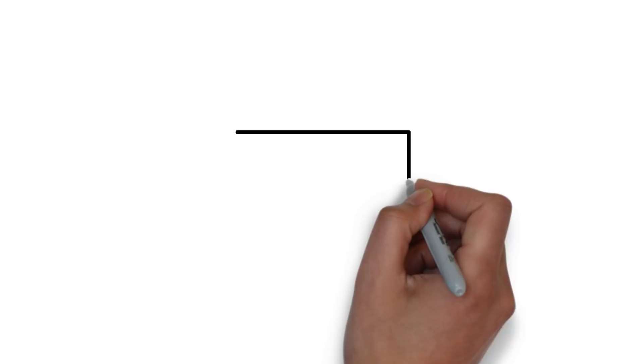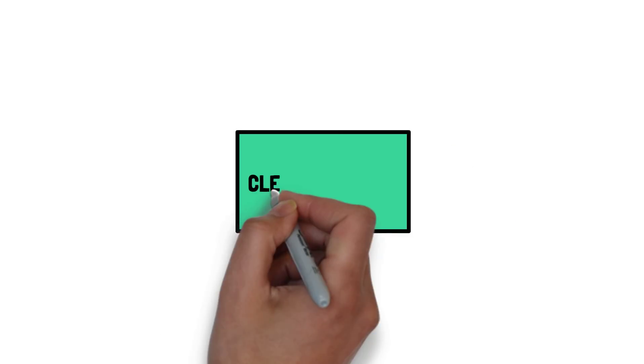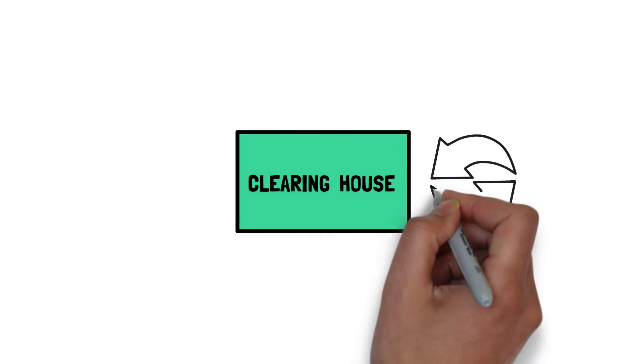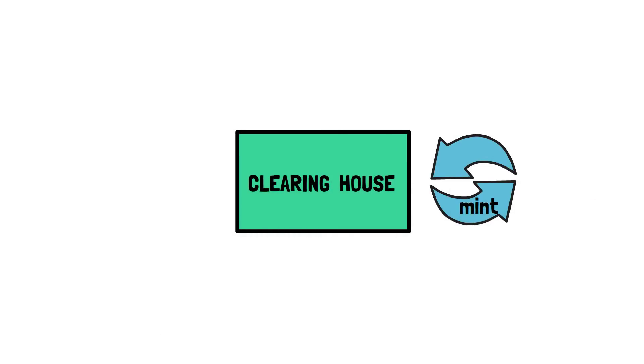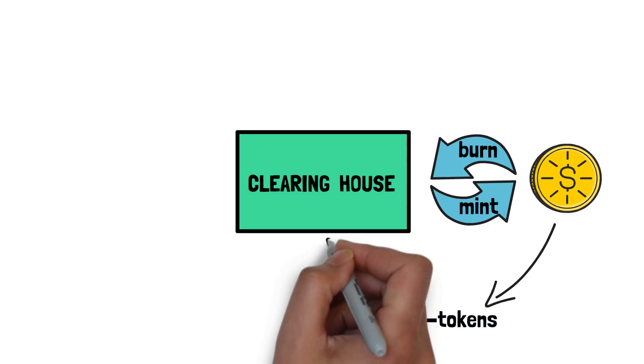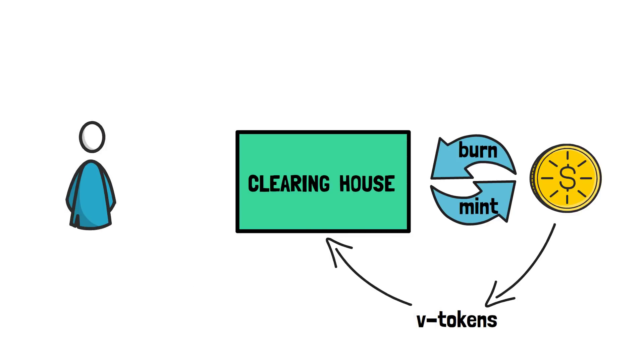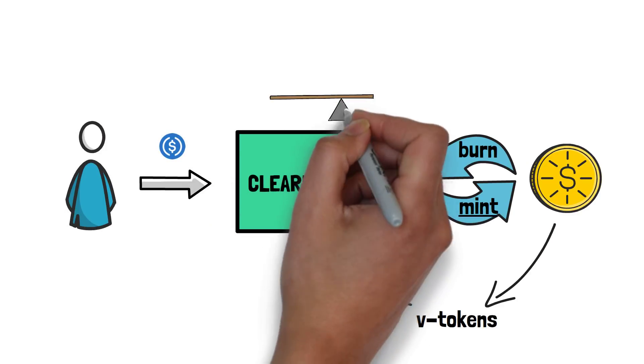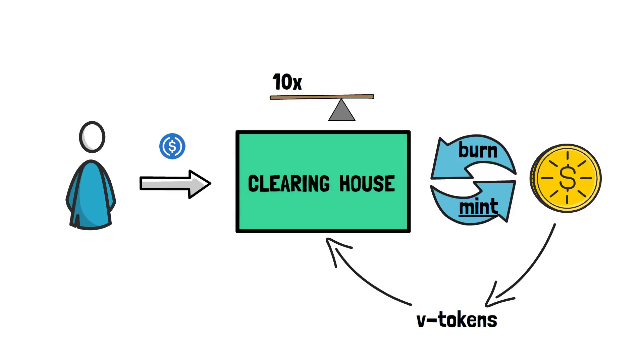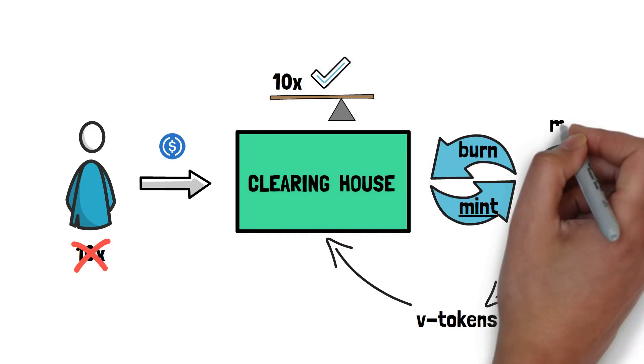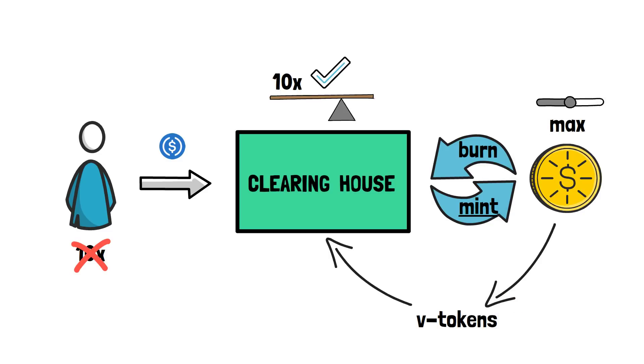At the center of perpetual protocol design lies the Clearinghouse smart contract. Clearinghouse is responsible for minting and burning virtual tokens, called V tokens, that are held by the contract on behalf of the user. When a user deposits USDC to the exchange, the Clearinghouse contract mints V tokens, using the max available leverage. This doesn't mean the user has to use the maximum leverage when opening a position, and it only gives the user the opportunity to do so by issuing the maximum number of tokens that the user may or may not use.